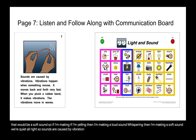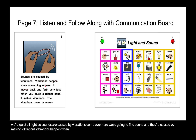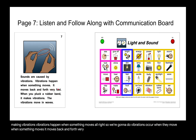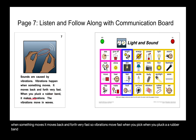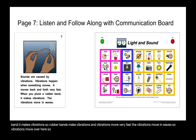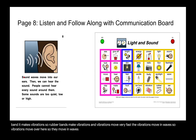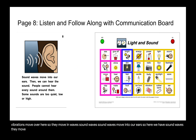Sounds are caused by vibrations. We're going to find sound — they're caused by vibrations. Vibrations happen when something moves back and forth very fast. When you pluck a rubber band, it makes vibrations. Rubber bands make vibrations and vibrations move very fast. The vibrations move in waves. Sound waves move into our ears — they move through our ears, and then we can hear the sound.